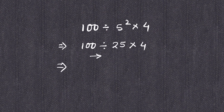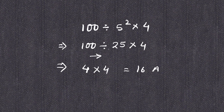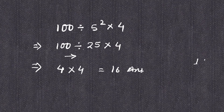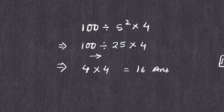Solving from left to right, the division part is done first: twenty-five divides into a hundred giving four, and four times four is sixteen. This is your answer. If you are getting one as your answer, remember that we solve from left to right — do not do the multiplication first. Solve the division first, and sixteen is your answer.